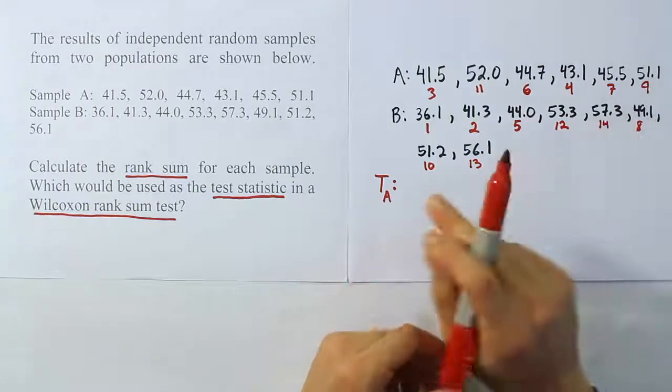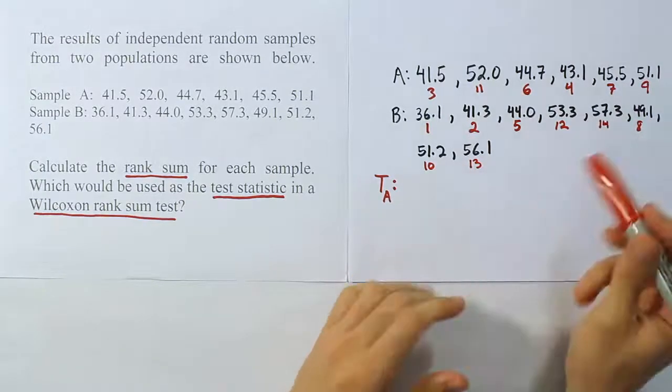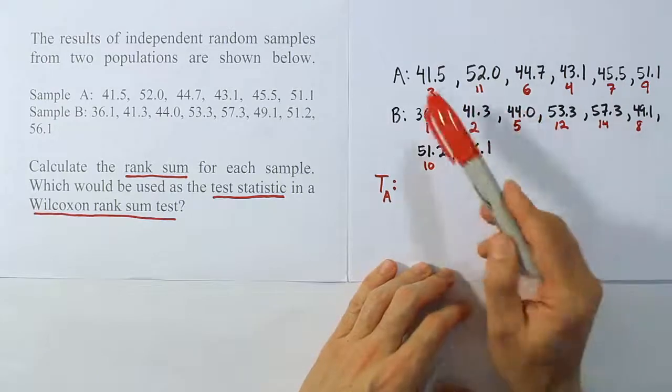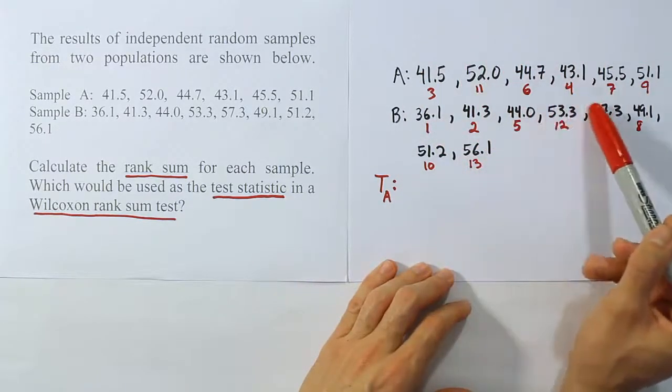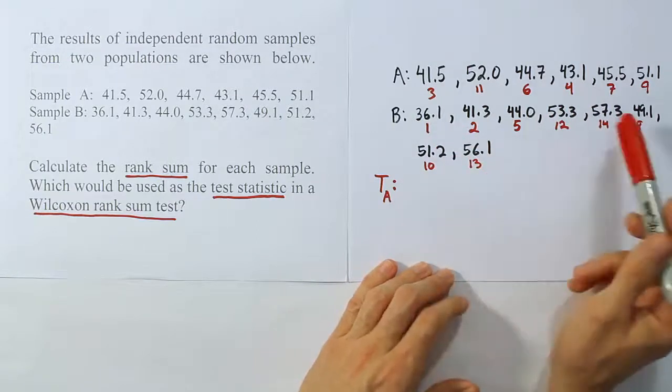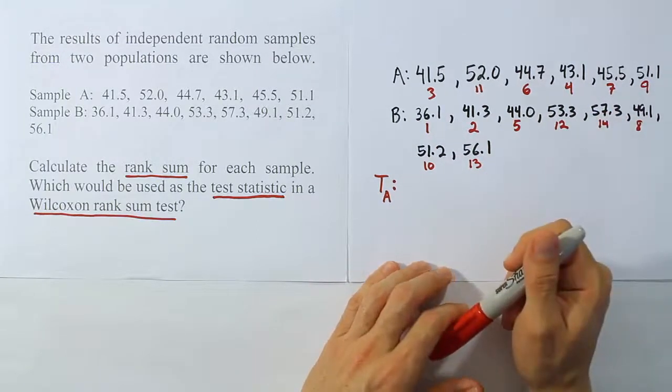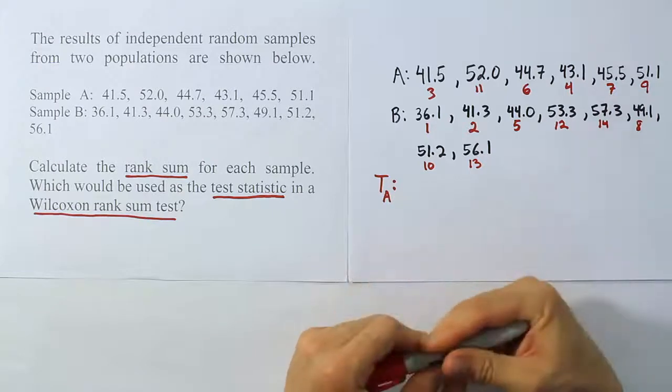Now that last rank here should be tied with the number of values we have total. Let's see. 1, 2, 3, 4, 5, 6, 7, 8, 9, 10, 11, 12, 13, 14. So there's my 14 values. There's my highest rank total, 14, or rank number, which is 14. So that's good.